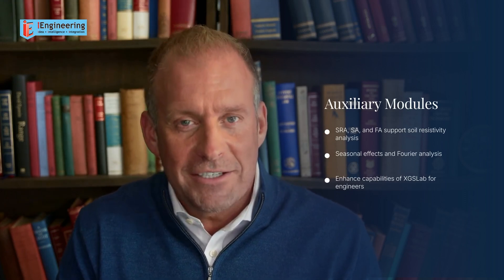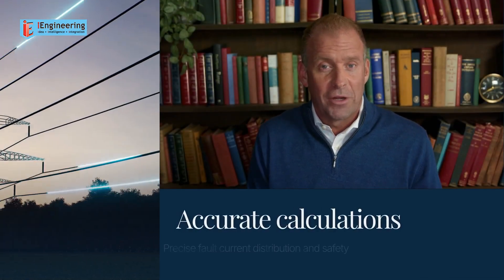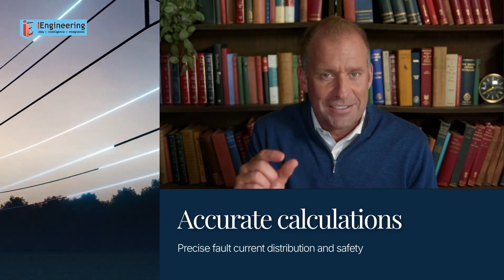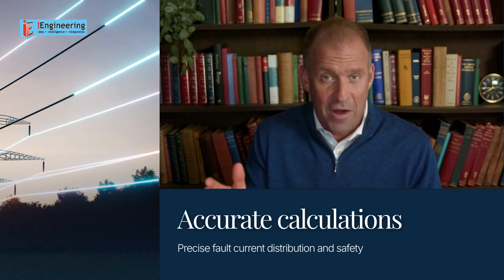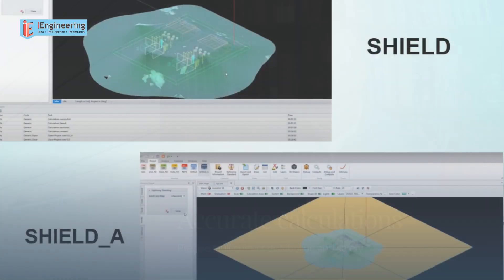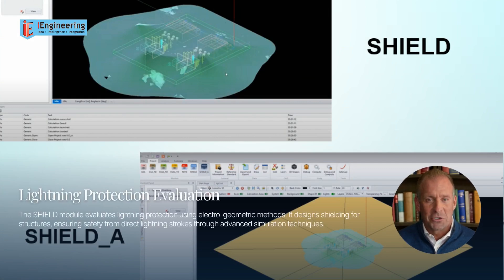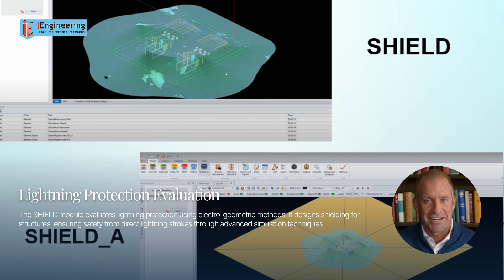Auxiliary modules like SRA, SA and FA support soil resistivity analysis, seasonal effects and Fourier analysis. These tools enhance the capabilities of XGSLAB, providing comprehensive solutions for engineers. The NETS module accurately calculates fault current distribution and electromagnetic interference, considering alternative return paths and ensuring precise results for earthing system sizing and safety. The SHIELD module evaluates lightning protection using electro-geometric methods, designing shielding for structures and ensuring safety from direct lightning strokes through advanced simulation techniques.